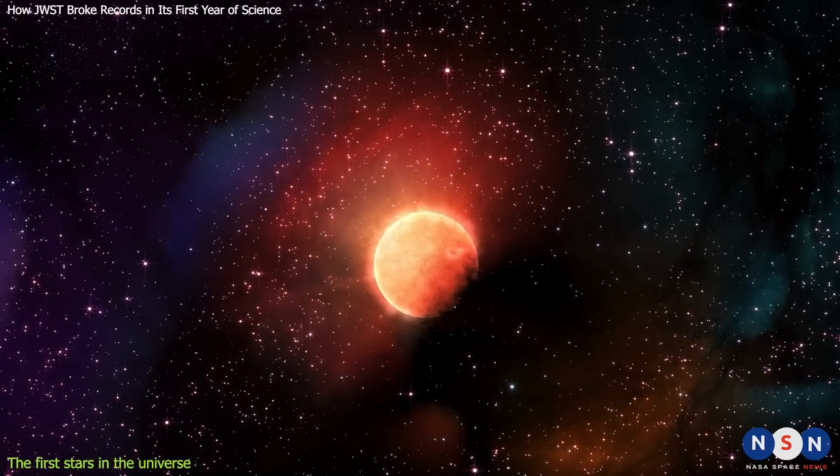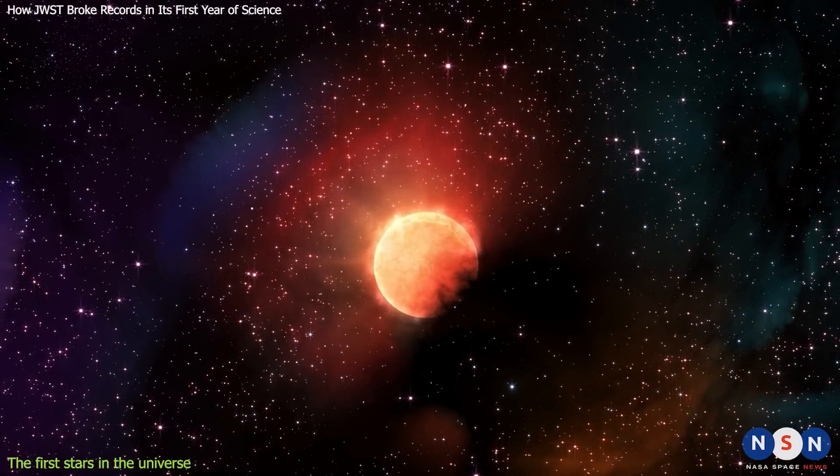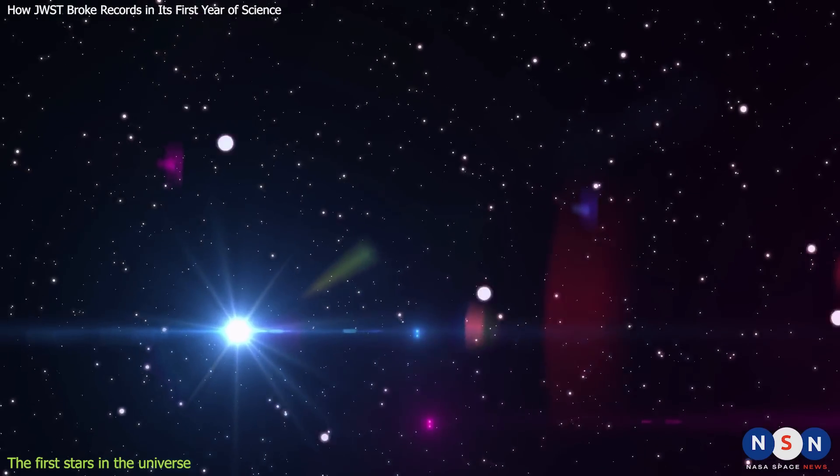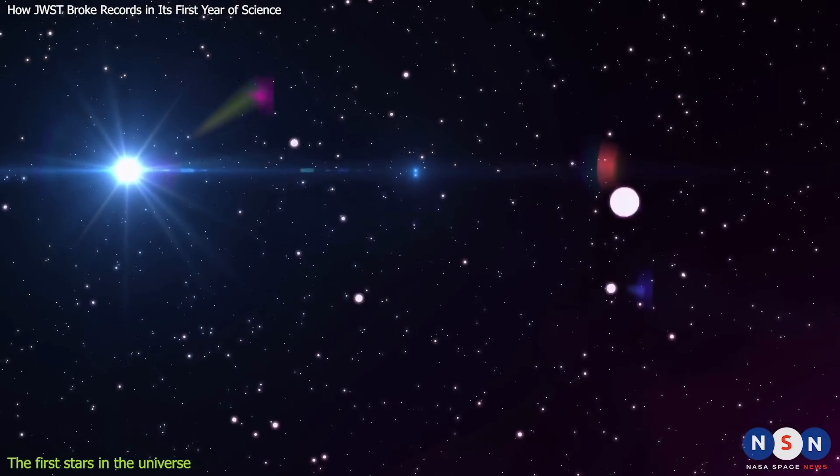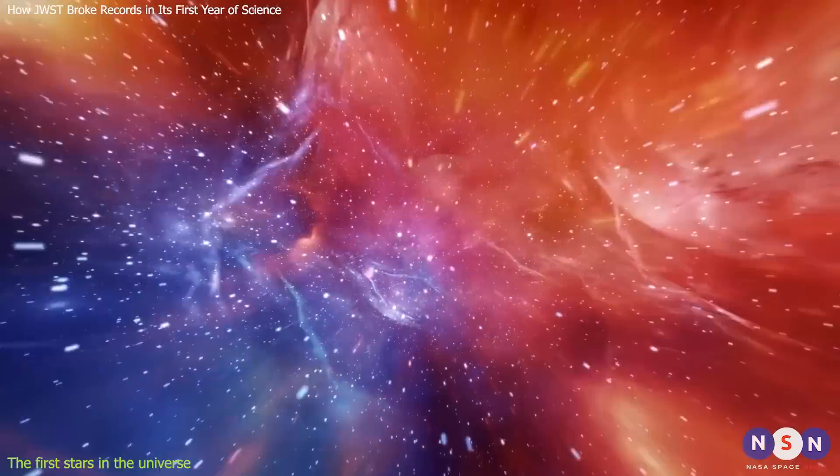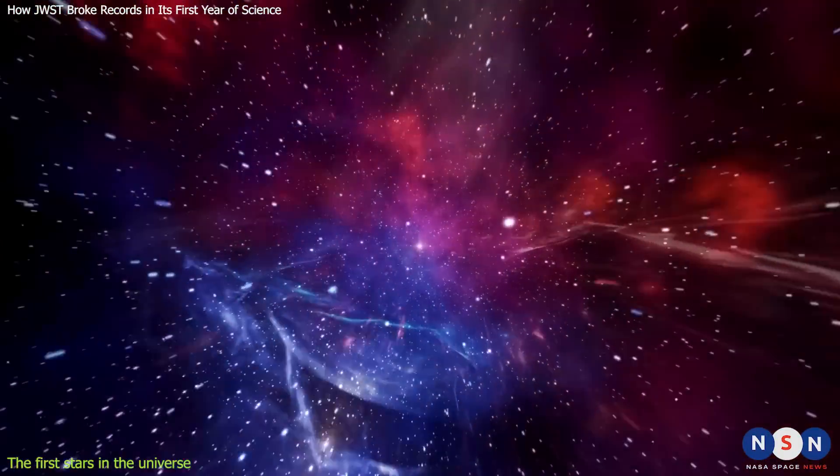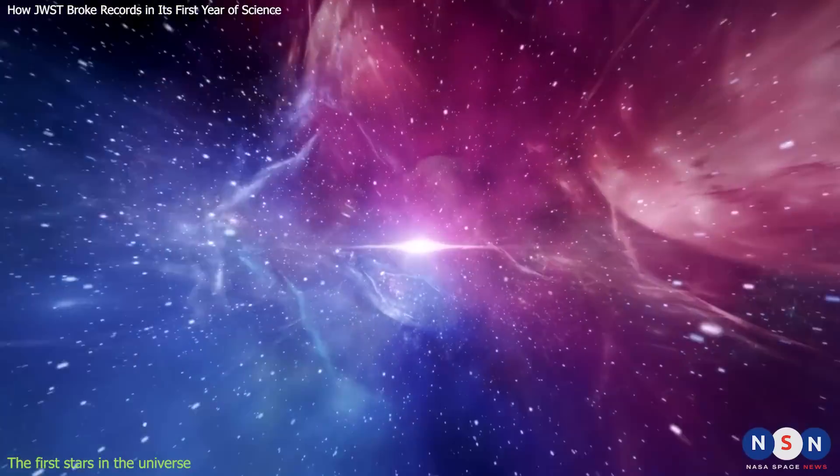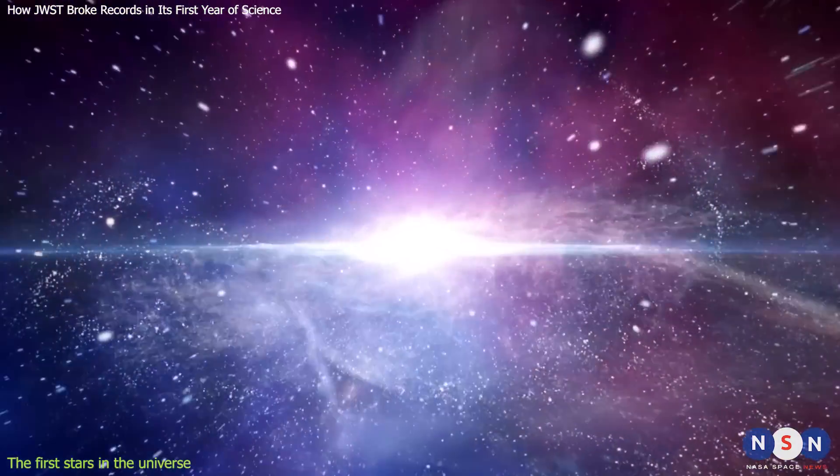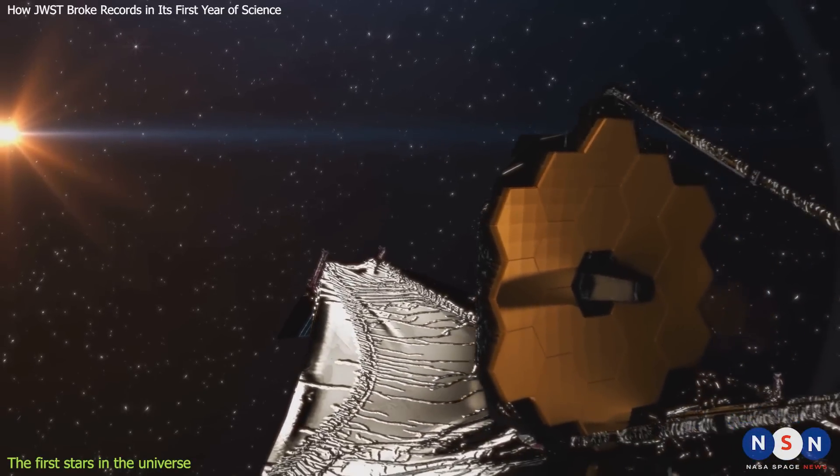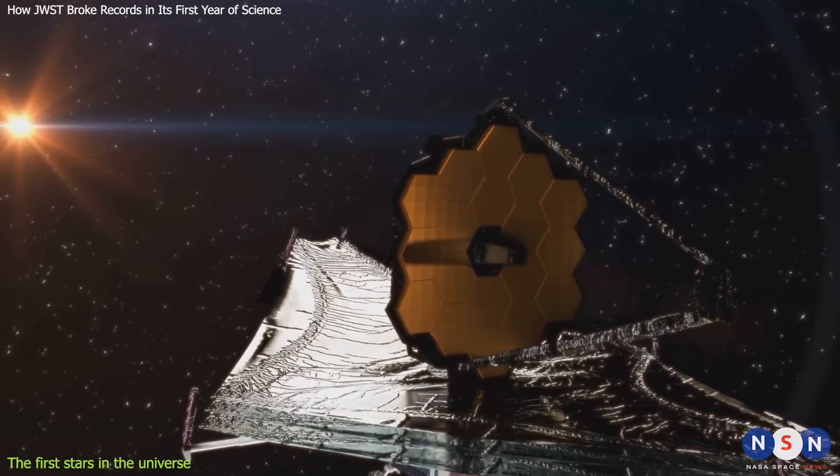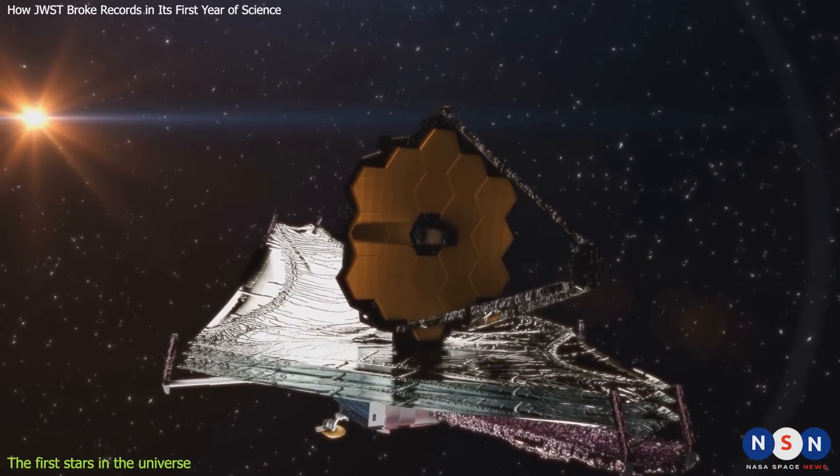But how did these stars form, and what did they look like? This is one of the most elusive questions in cosmology, as Pop III stars are extremely difficult to observe. They are very rare, very distant, and very faint compared to the background glow of the universe. They are also expected to have formed in small groups or clusters, rather than in large galaxies. Therefore, we need a very sensitive and precise instrument to detect them. And that's where James Webb comes in.